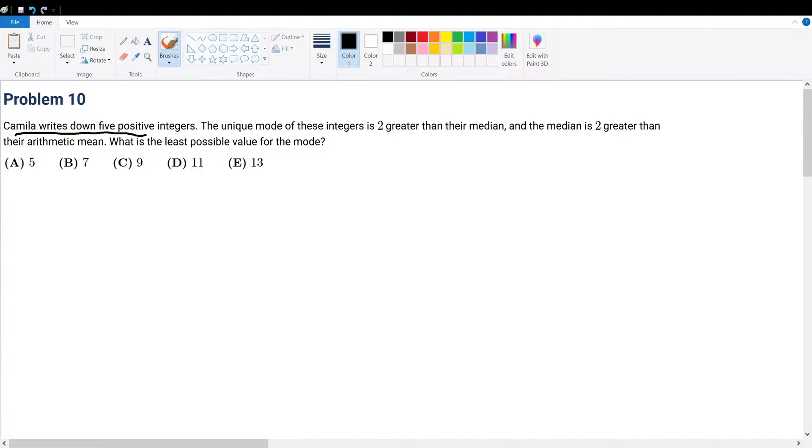Camila writes down five positive integers. That must mean the integers are positive, but I don't know what they are, so make five slots to represent them. The unique mode of these integers is 2 greater than their median. Let's say the median is x. If this were the median, that must mean this is less than the median and this is larger than the median by convention. So from here, what must be the mode?